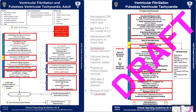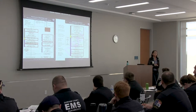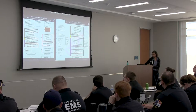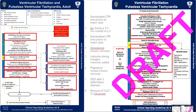V-fib and pulseless V-tach: standardized CPR instructions from the state. Epi dosing was changed from every four minutes to every three to five minutes. Amiodarone infusion was removed. Lidocaine dosing was changed and a maximum was added. Magnesium was moved and the infusion for magnesium was removed. Big change: dual sequential defibrillation is going to be after five defibrillation attempts, in line with the state. Removal of calcium chloride and calcium gluconate from the protocol.